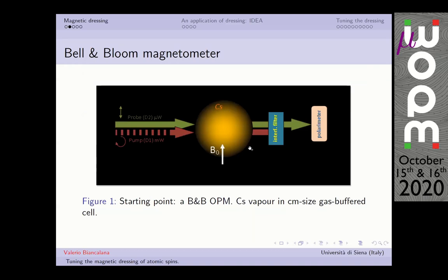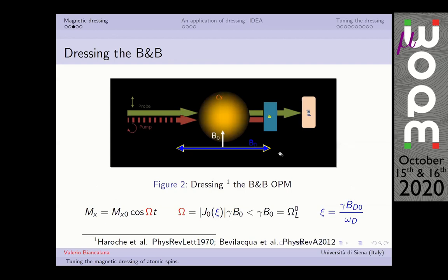The starting point is a Bell-Bloom magnetometer. We have a cesium cell illuminated with two collinear lasers, one to pump and one to probe. An interference filter stops the pump, and then we analyze with a polarimeter the probe laser. This is just a standard Bell-Bloom setup. What we do is add a new field which is parallel to the probe beam and transverse to the static field.